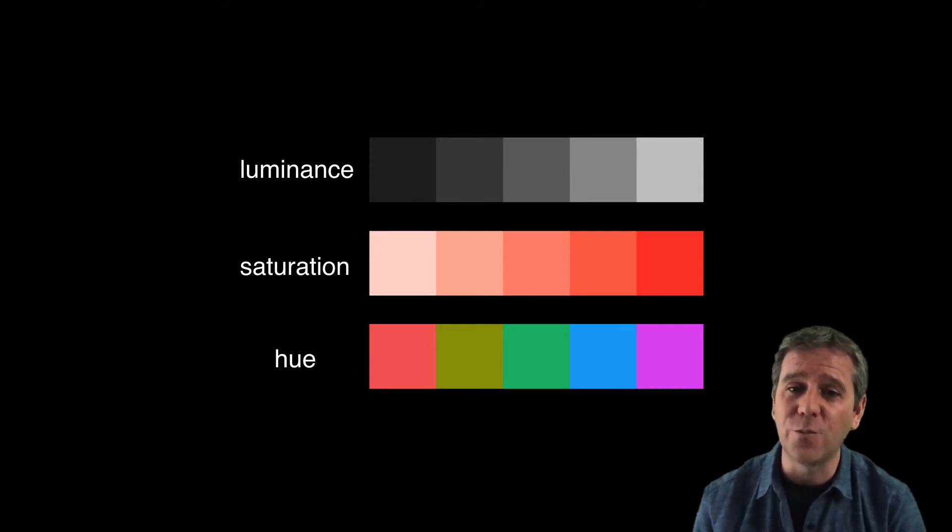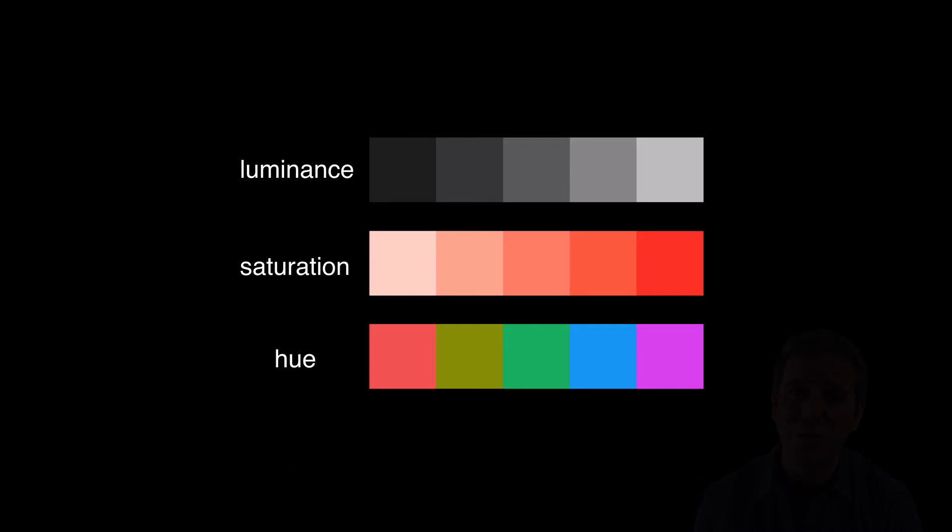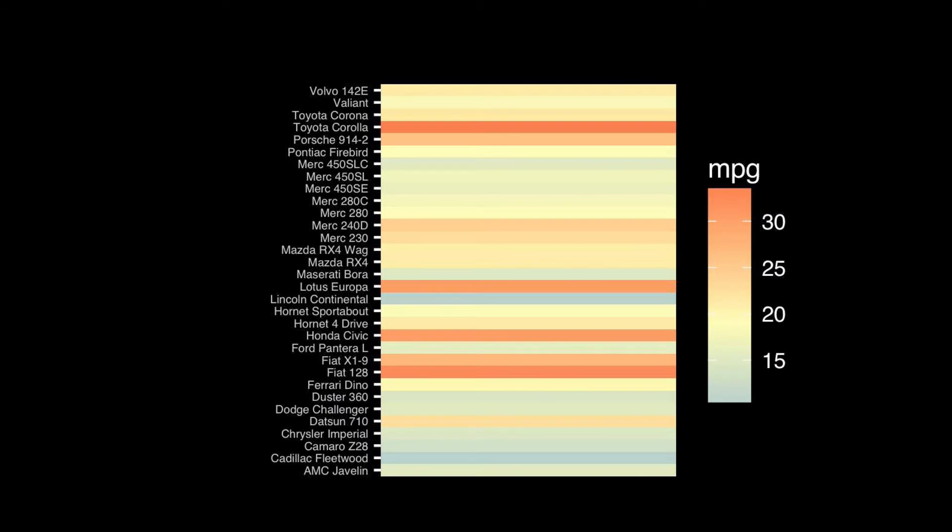Saturation refers to the intensity of a color in an image—how much of that color there is. In technical terms, it's an expression of the bandwidth from a light source. And luminance is the perceived brightness of color.